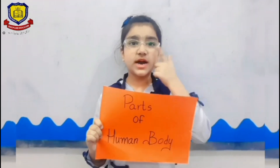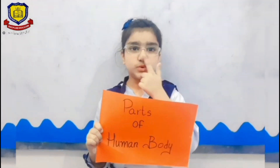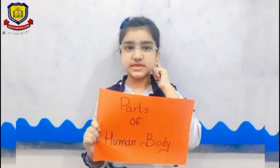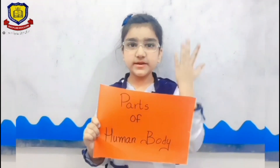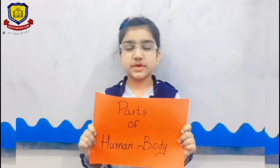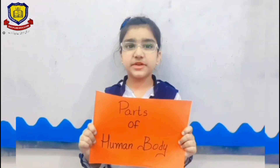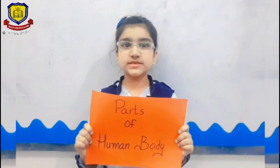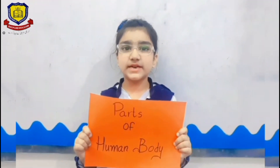External parts of the body are eyes, nose, ears, hands, and fingers. And internal parts of the body are brain, lungs, muscles, and heart.